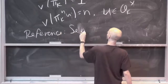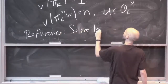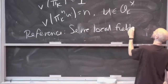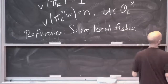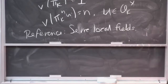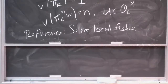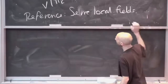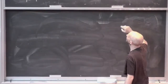There's a valuation V_K: K* → Z (normalized so V_K(π_K) = 1), with V_K(π_K^n · u) = n for u in O_K*. So that's what local fields look like. Now let L over K be an algebraic extension — you can stick to the case L/K finite if you're nervous about infinite extensions of p-adic fields.